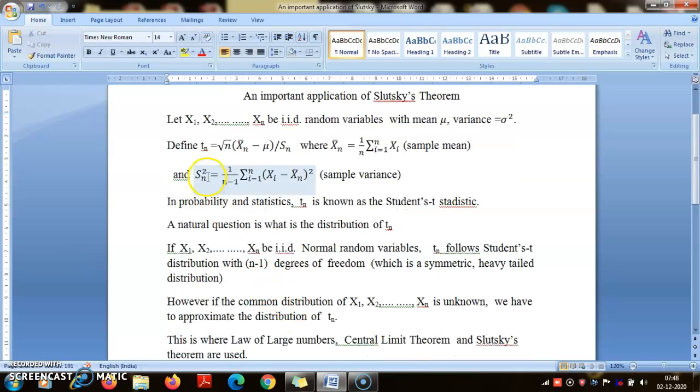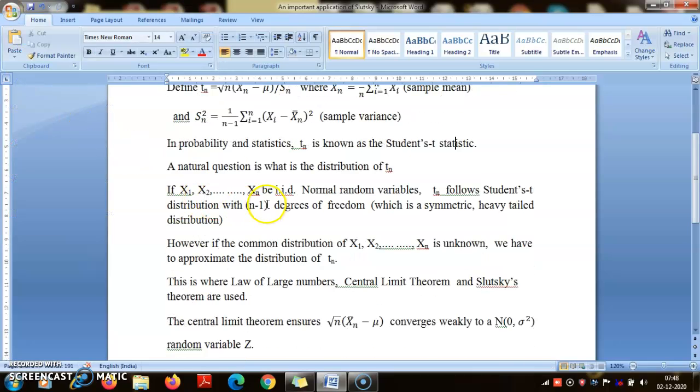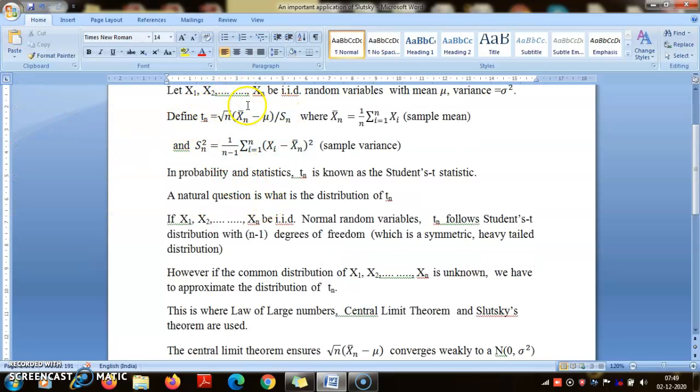In probability and statistics, this ratio Tn is known as the Student's t statistic. This is a mighty useful quantity in probability and statistics; it is used in a wide variety of contexts.